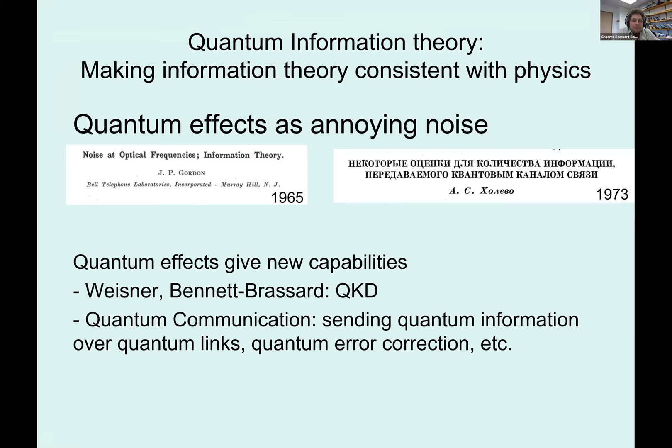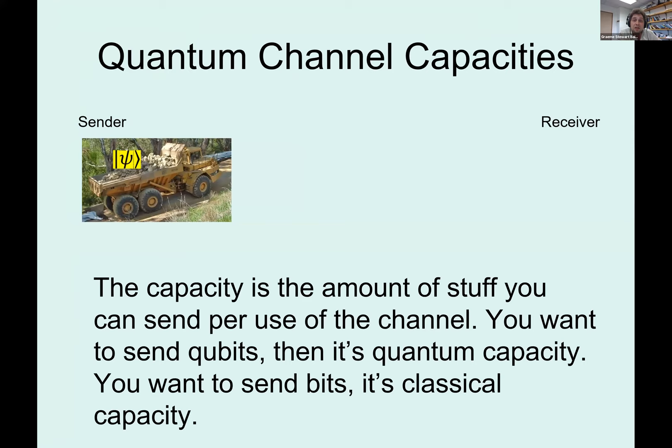The first time people brought quantum effects into information theory was in the 1960s, when Gordon and later Holevo independently looked at sending classical information in systems where quantum effects are important. The Gordon paper contains what we call the Holevo information as a conjectured relevant quantity, which Holevo later confirmed. In the 1980s and later, people began thinking about quantum effects as giving new capabilities — quantum money from Wiesner, Bennett-Brassard's QKD proposals — and in the 1990s, thinking about sending quantum information over quantum links and doing error correction.